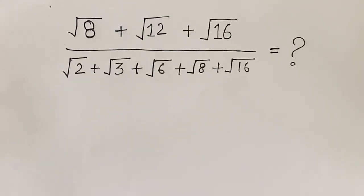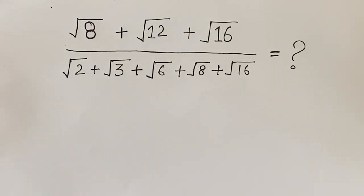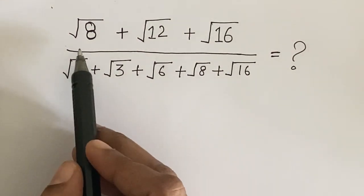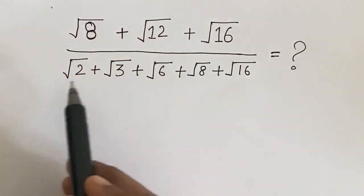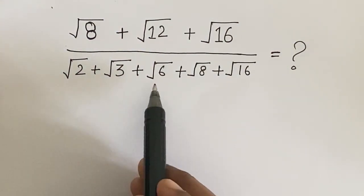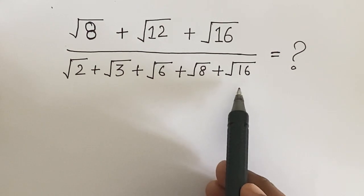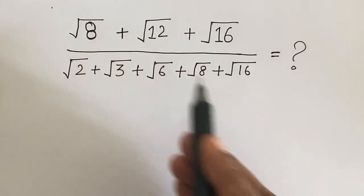Hi friends. Let us see how to solve this interesting simplification problem. The given problem is square root of 8 plus square root of 12 plus square root of 16, all over square root of 2 plus square root of 3 plus square root of 6 plus square root of 8 plus square root of 16.